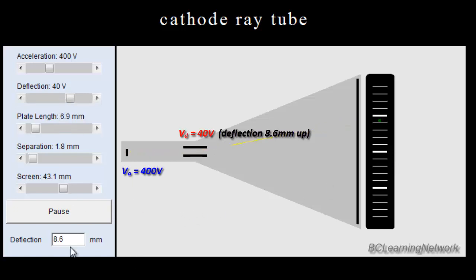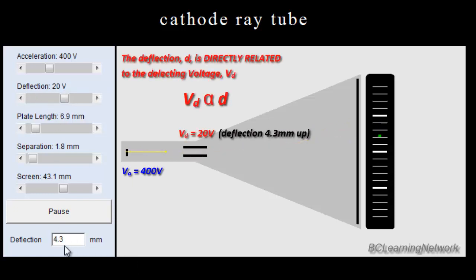So if I have 40 volts at 8.6 millimeters of deflection, 20 volts should be half of that. It should be 4.3. So if I go back to 20 and give it a chance to run, you see we're back to 4.3 millimeters of deflection. A direct relationship. Double one, you double the other. Half one, you half the other.